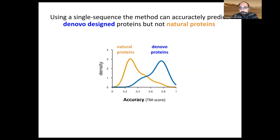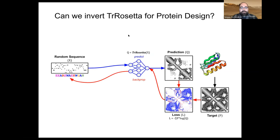The same observation has been made for RoseTTAFold and AlphaFold — they don't work well with a single sequence for natural proteins, but for de novo design proteins it works really well. A TM score above 0.5 means you've got roughly the right fold. So the design idea is: take your target structure, compute the distance matrix, start with a random sequence, pass it to TrRosetta, get a predicted distance matrix, take the difference as the loss, and backpropagate to update the input sequence.